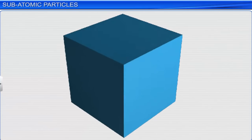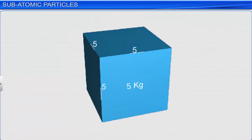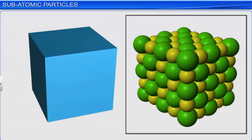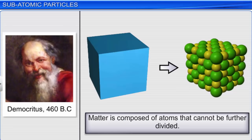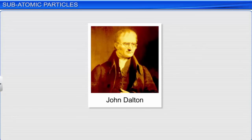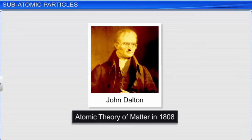Any substance that has mass and occupies space is called matter. It is made up of small particles called atoms that cannot be further divided. This idea was first proposed by the Greek philosopher Democritus back in 460 BC. However, due to the lack of scientific evidence, Democritus' ideas were considered mere speculations and ignored for 2000 years until John Dalton proposed the atomic theory of matter in 1808.